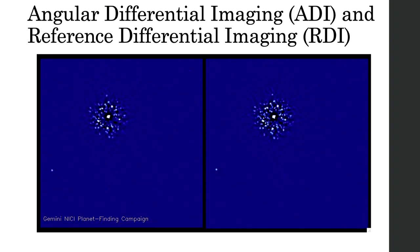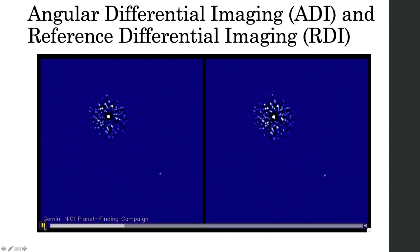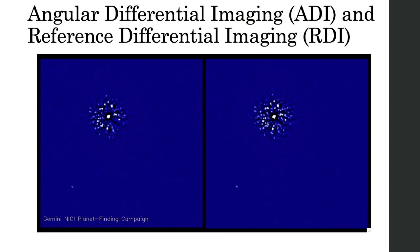Here are two different techniques: angular differential imaging, which you heard about in the protoplanets talk yesterday, and reference differential imaging. The key point is that these techniques use various approaches to decorrelate your real object from the speckle. Here's a dual-band imager — we've let the telescope rotate, let the field rotate on the sky, and this real background star tracks with the parallactic angle, whereas speckles closer in just wobble about. If the object were closer in, you could detect it because it moves differently than the speckles.